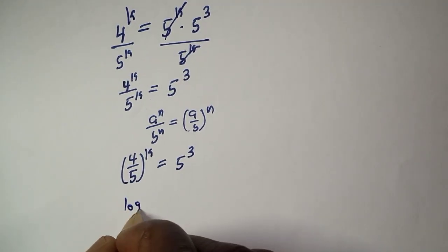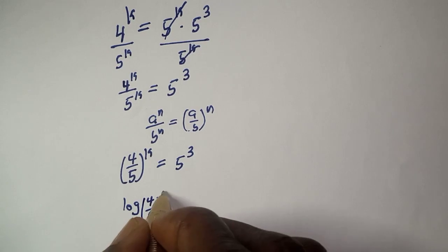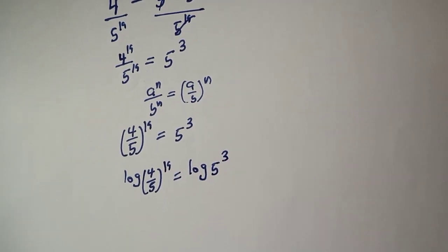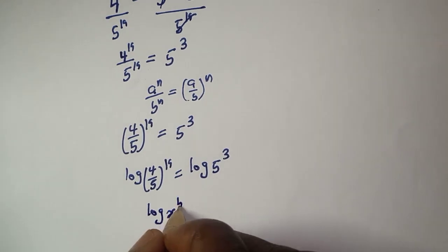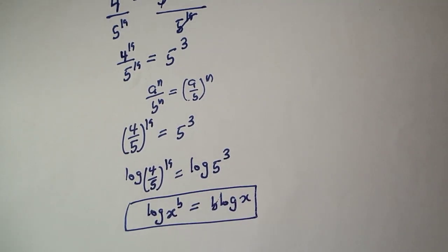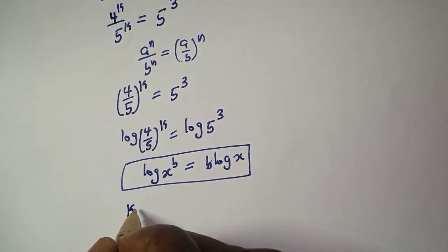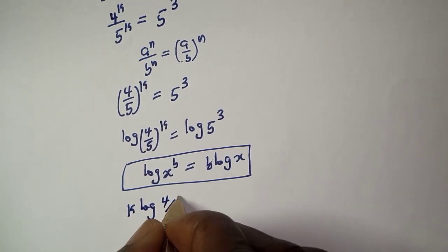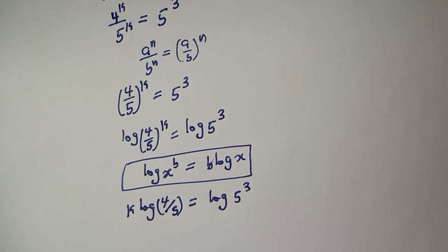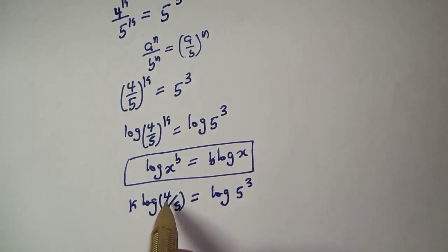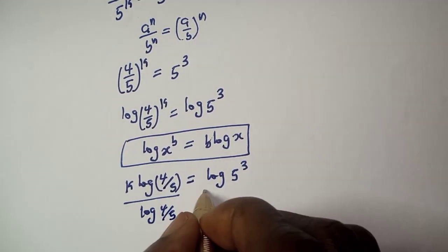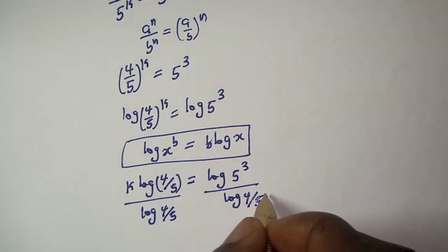Let's take the log of both sides. We have log of 4 over 5 raised to power k is equal to log of 5 raised to power 3. Applying the power rule of logarithms, we get k times log of 4 over 5 is equal to 3 times log 5. We are looking for the value of k, so let's divide both sides by log 4 over 5.